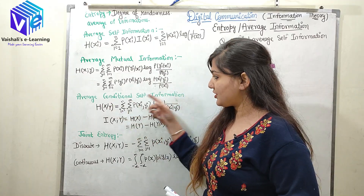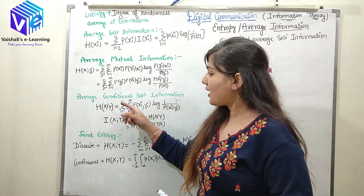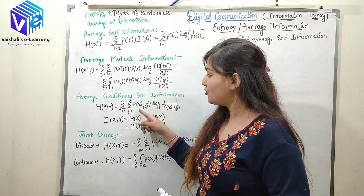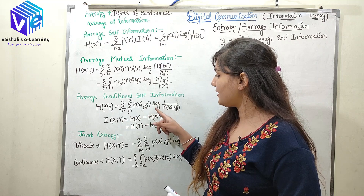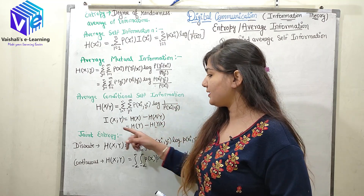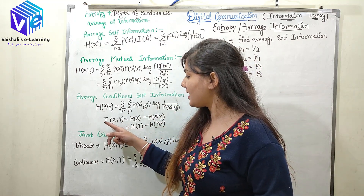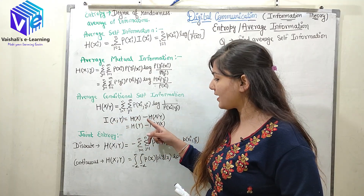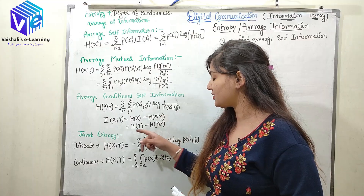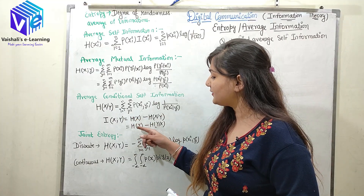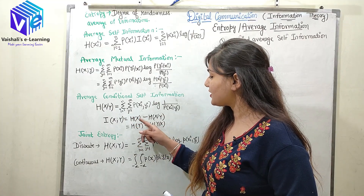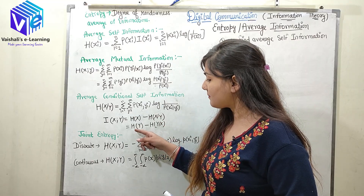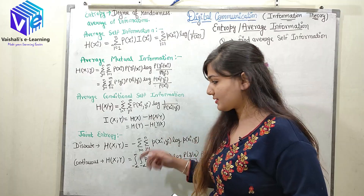The average conditional self-information is given by the summation of joint probability multiplied by log of 1 upon conditional probability. Joint information I(x,y) equals average self-information minus conditional self-information, which is H(x) - H(x|y), or equivalently H(y) - H(y|x).